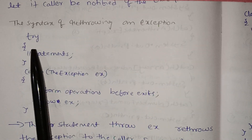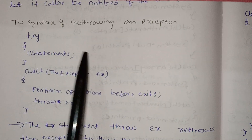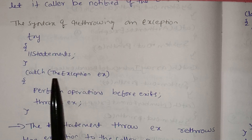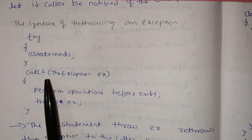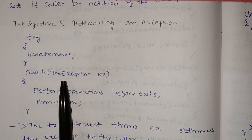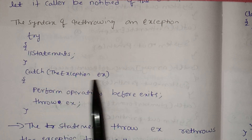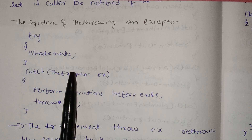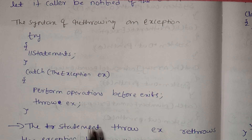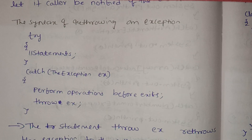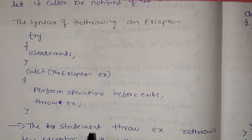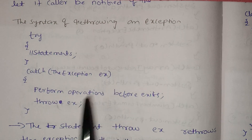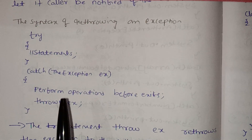The syntax for re-throwing an exception: inside the try block we have the main statements. Here is the catch block with the exception — string index out of bounds, or arithmetic exception. If there is a try block with an arithmetic exception, ex is the reference variable or object. After the operations, we will throw ex in the catch block.